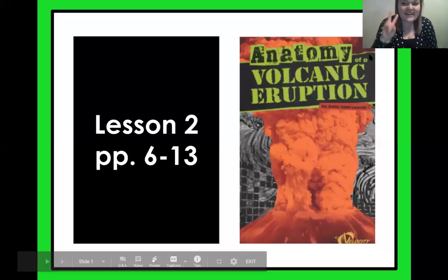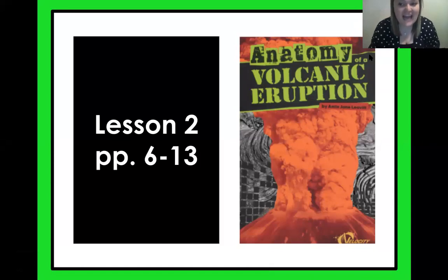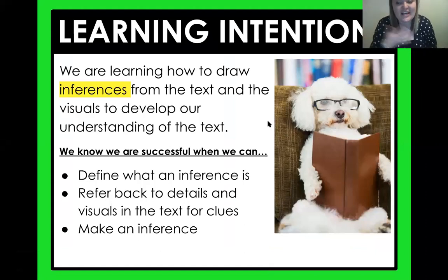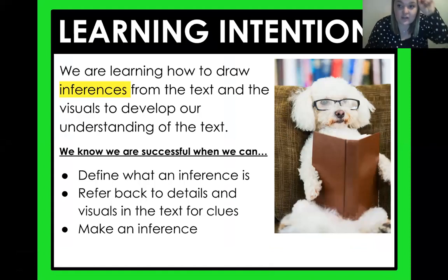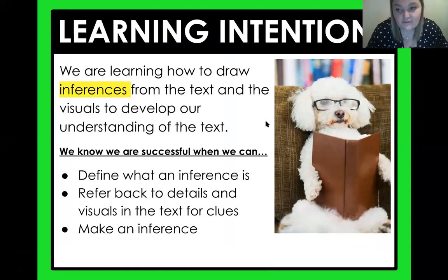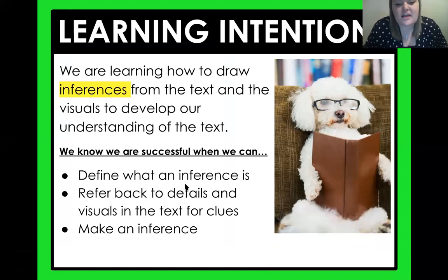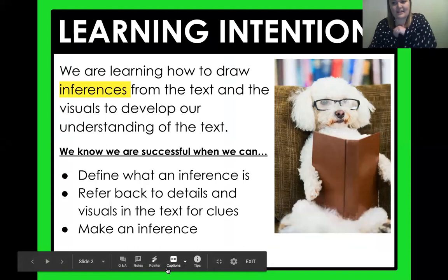We are on lesson two of 'Anatomy of a Volcanic Eruption,' and today we are learning to draw inferences, just like we did in our last lesson, from the text and the visuals. We're adding in — we've got to look at those visuals to develop our understanding of the text. We know we are successful today when we can define what an inference is, refer back to details in the text and visuals for clues, and then make an inference.